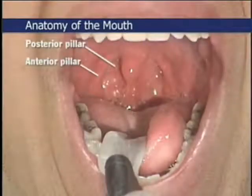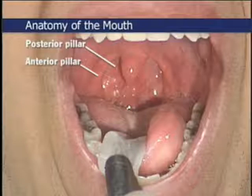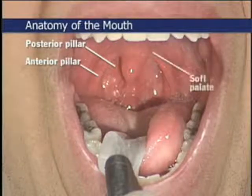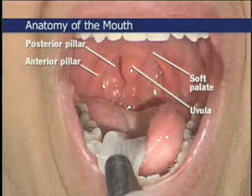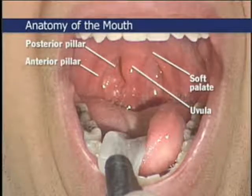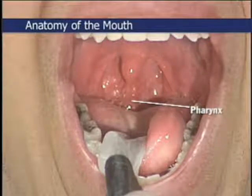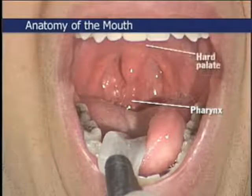Above and behind the tongue rises an arch formed by the anterior and posterior pillars, soft palate, and uvula. Between the pillars on both sides of the mouth, tonsils can be seen in their fossae or cavities; in adults the tonsils are often small or absent. Between the soft palate and tongue, the pharynx is visible. The hard palate forms the roof of the mouth.